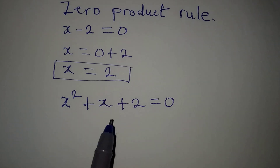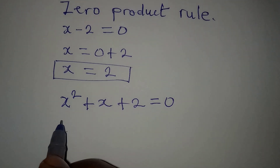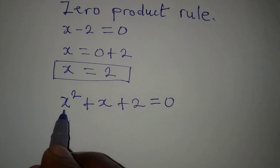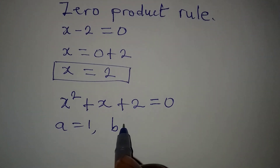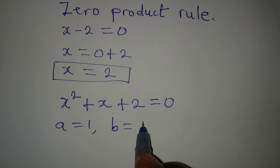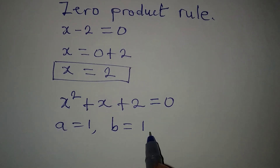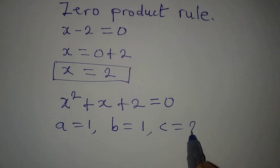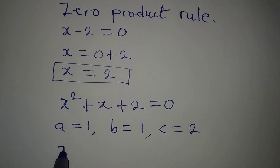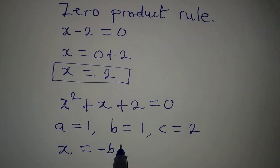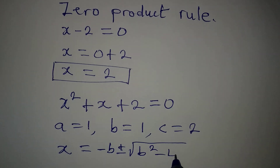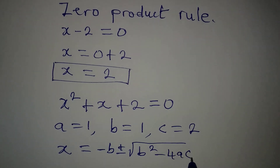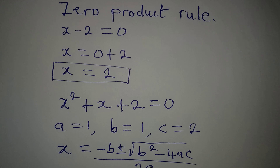We are going to use the formula method to solve it. According to the formula, a is 1, b is 1, and c is 2. The formula is x equals minus b plus or minus square root of (b squared minus 4ac), all over 2a.